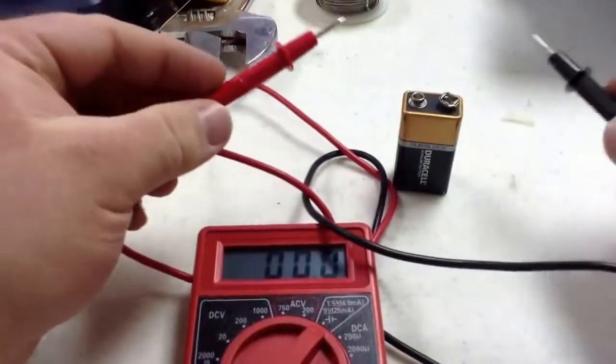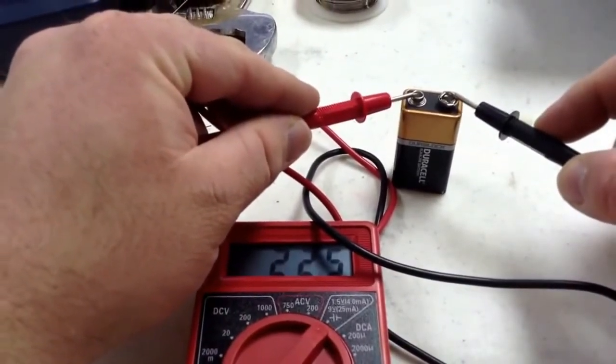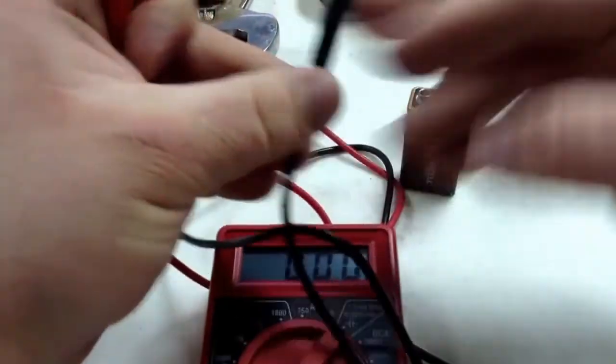So black is negative, red is positive. It shows that we have 22.5mA, meaning this is a slightly used battery.